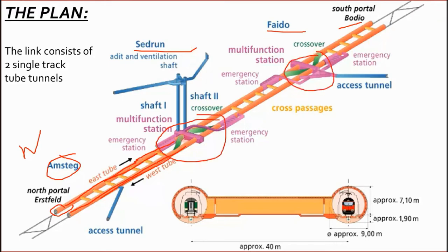You can see the green cross-passages: at these points the train can switch from one tunnel to the other in case of emergency or construction work. In between the two tubes there are also emergency galleries at every 325 metres, connecting the two tubes so that in any emergency passengers and workers can evacuate.